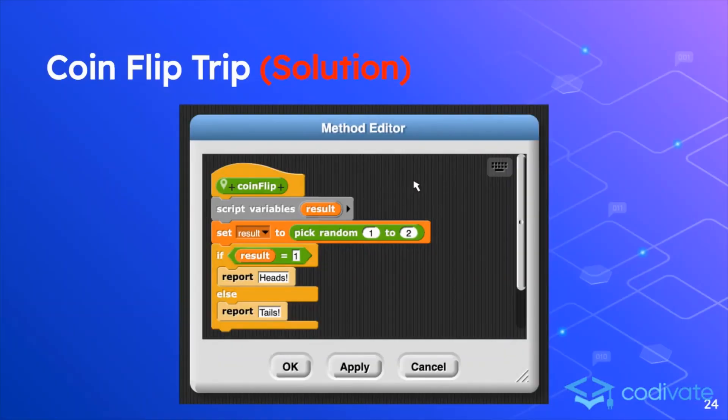So the solution to the previous exercise, assuming you had a go at it. There are no parameters here, but you create a script variable called result. You set result equal to pick random 1 to 2, so you pick 1 or 2. And if the result equals 1, you report heads, otherwise you report tails.